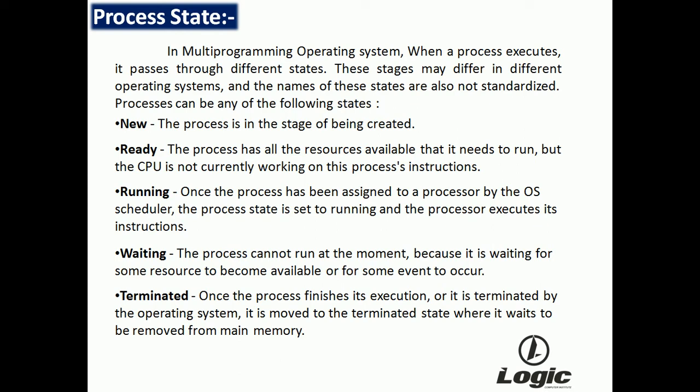Next, Waiting: the process cannot run at the moment because it is waiting for some resource to become available or for some event to occur — that state is called Waiting. Next, Terminated: once the process finishes its execution, or it is terminated by the operating system, it is moved to the terminated state, where it waits to be removed from main memory. These are the different types of states.